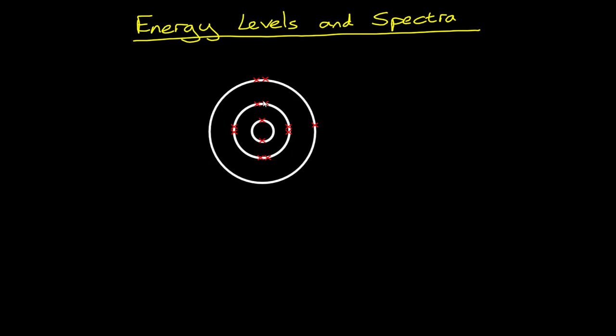The electrons in each shell have got a particular energy. In physics, it's usually easier to represent these shells as lines. The lowest energy level we call the ground state.